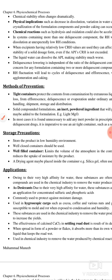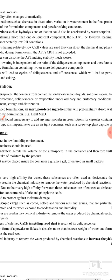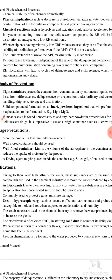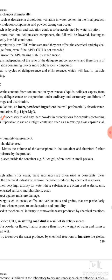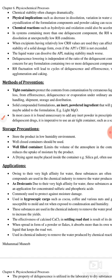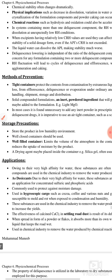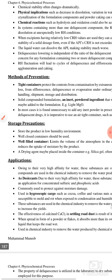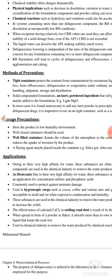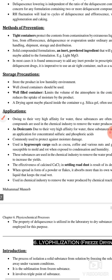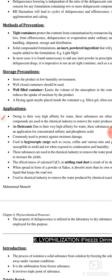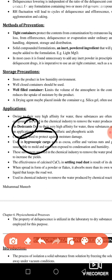Methods of prevention include using tight containers so that no change in physical and chemical properties occurs. You can also incorporate an inert powder ingredient such as a surfactant or emulsifier to prevent water absorption, though in some cases adding a powder may affect the drug's properties. For storage, keep them in a low humidity environment in a well-closed container, and a drying agent should be used.